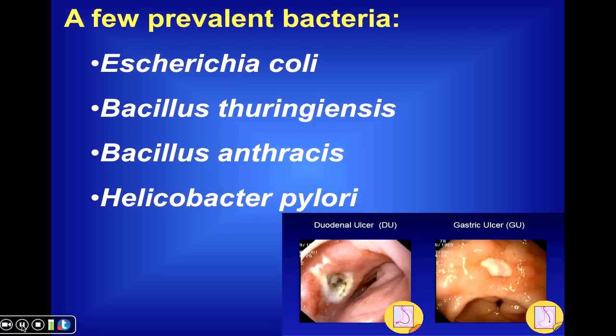Bacillus thuringiensis, or simply Bt, is the bacterium that produces a toxin that kills a variety of different types of caterpillars. The gene encoding for this toxic protein has been introduced to many crop plants, essentially allowing them to produce their own pesticides. Bacillus anthracis is simply the bacterium responsible for anthrax.